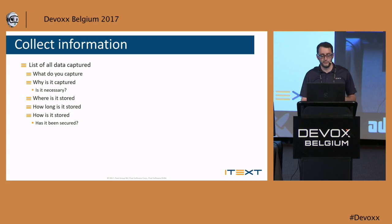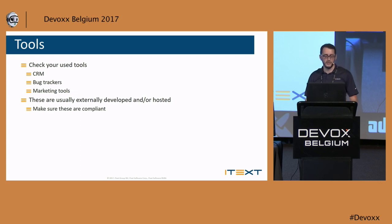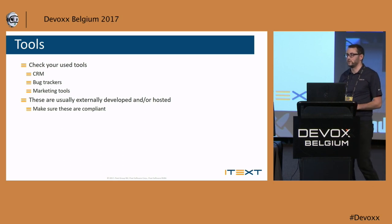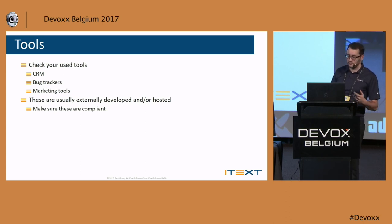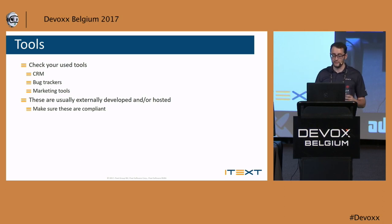Then check the tools you use. If you work for a bigger company you'll have a CRM, an ERP system — those also have sensitive personal data. Check whether those tools are compliant. You don't need to tell them to be compliant, just know whether they are or not and take action from there. Your marketing tools — are they compliant? These are usually externally developed or hosted, but that doesn't mean you can say 'I don't care' — you have to know whether or not you are compliant.